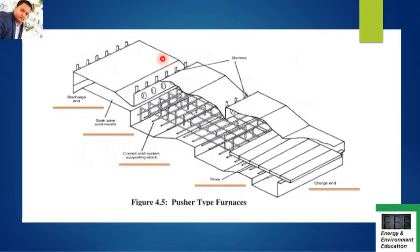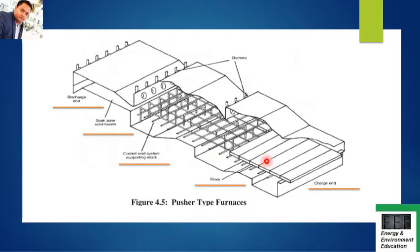This is the picture of the pusher type furnace. You can see the charge end and the discharge end. At the charge end, you are placing the stock to be heated inside the furnace. The discharge end is where the heated stock is removed. This is the soaking zone where the actual heating takes place. The hearth is a fixed type, and the stocks are placed here at the charge end. As they are slowly pushed, they enter the soaking zone where heating takes place, and finally the heated stock is discharged. This is the working principle of the pusher type furnace.